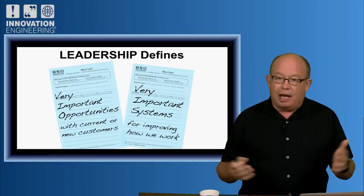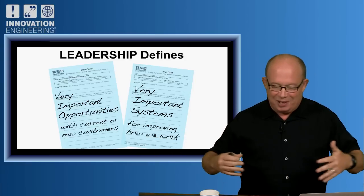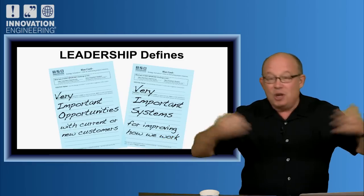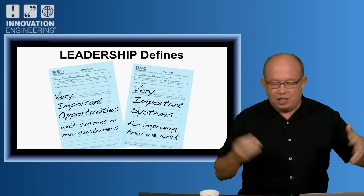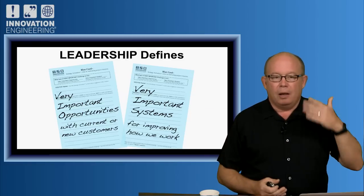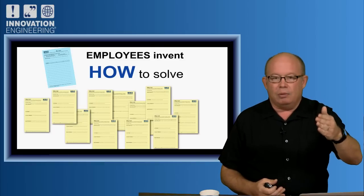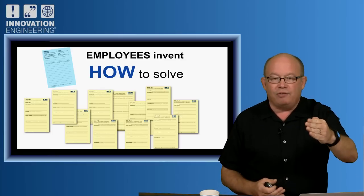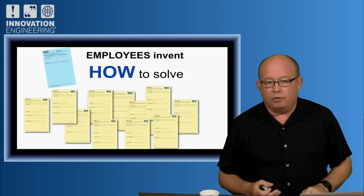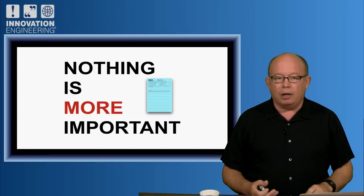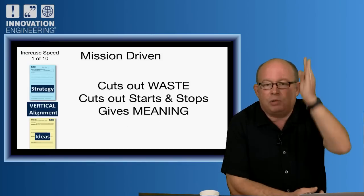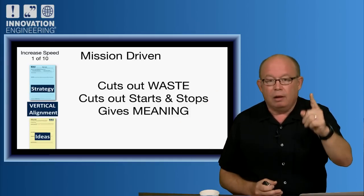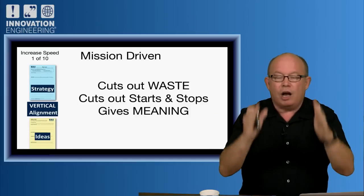What is the very important opportunity? We call these blue cards. Management defines the blue card. What is the mission? What is the purpose? Where are we going? What are the boundaries? What are the constraints? What's the narrative? Then employees invent the yellow card: how to solve it. Customer, problem, promise, proof. Nothing is more important. If you have alignment, vertical alignment between the strategy and the ideas, it cuts out waste, cuts out stops, gives meaning to the work. Number one: mission, focus, align.